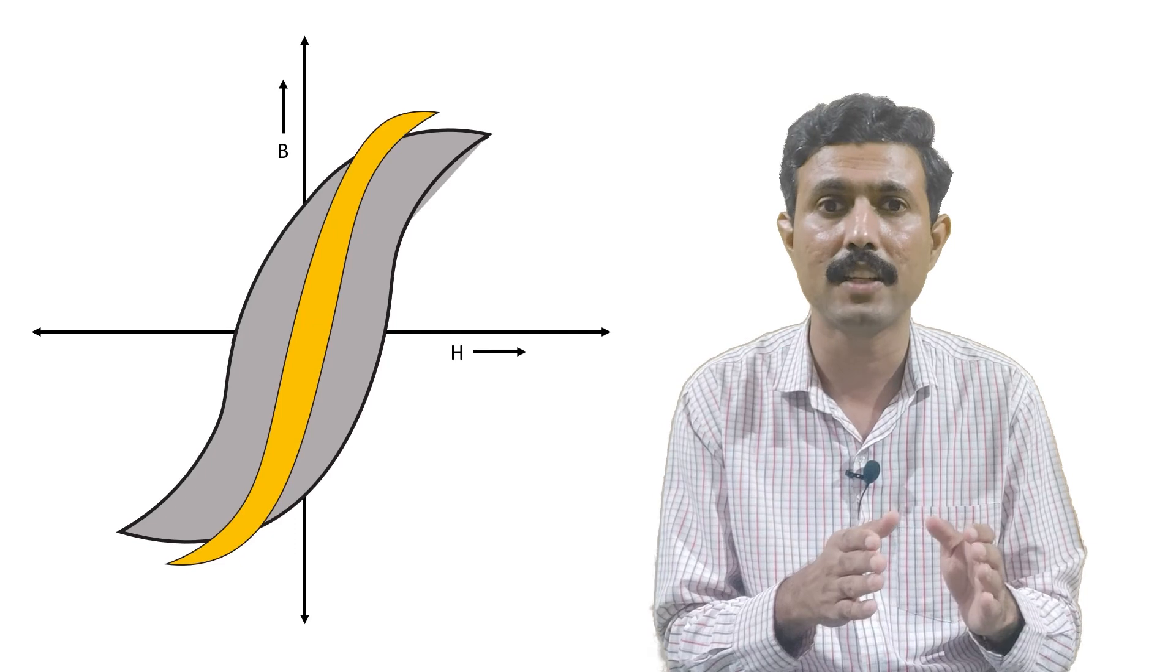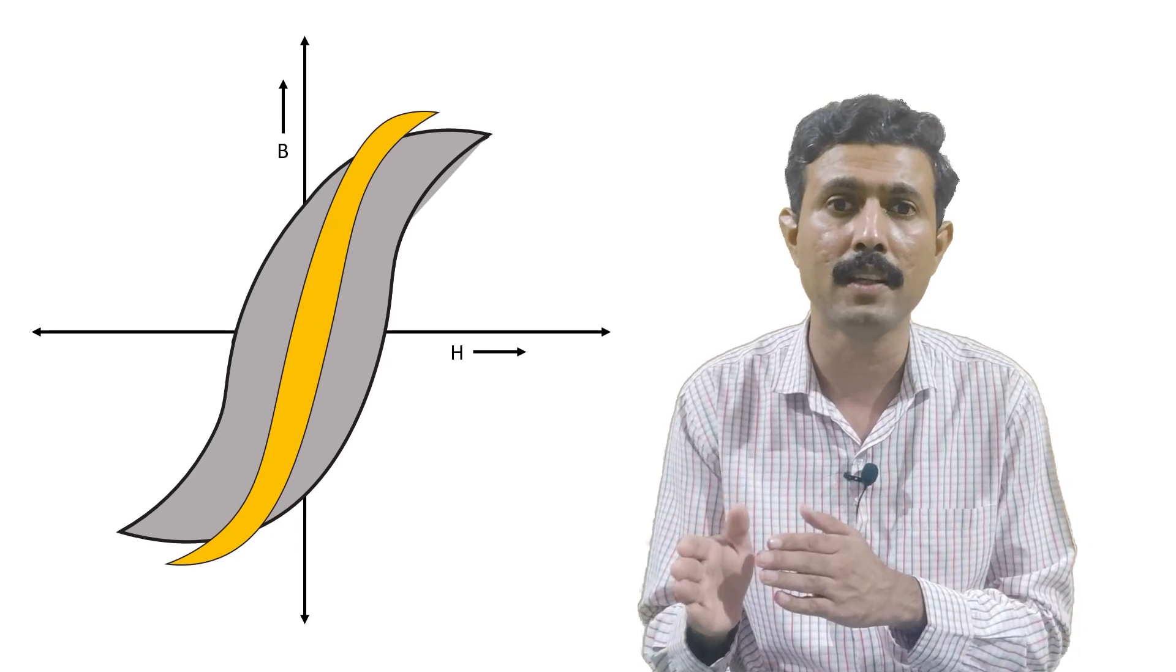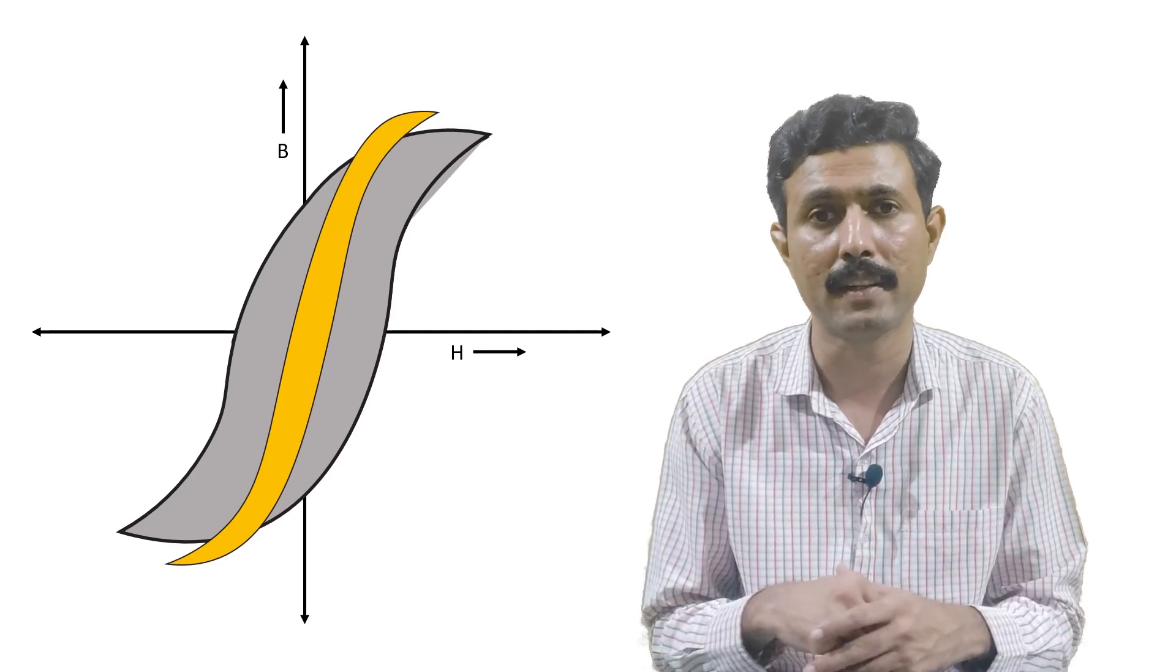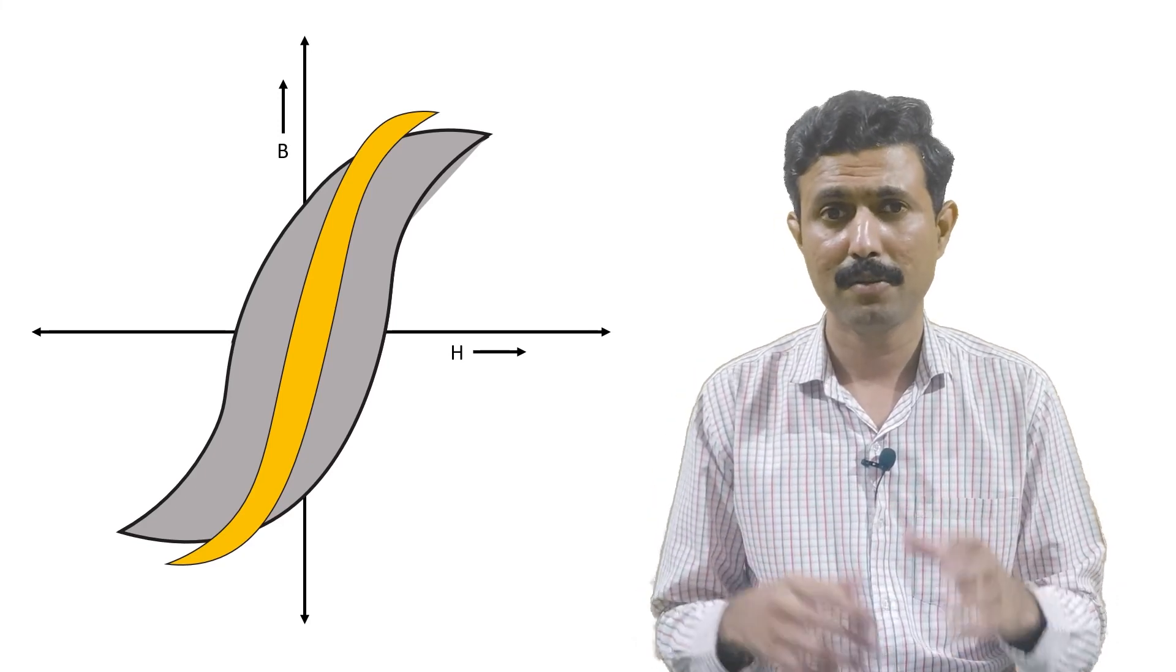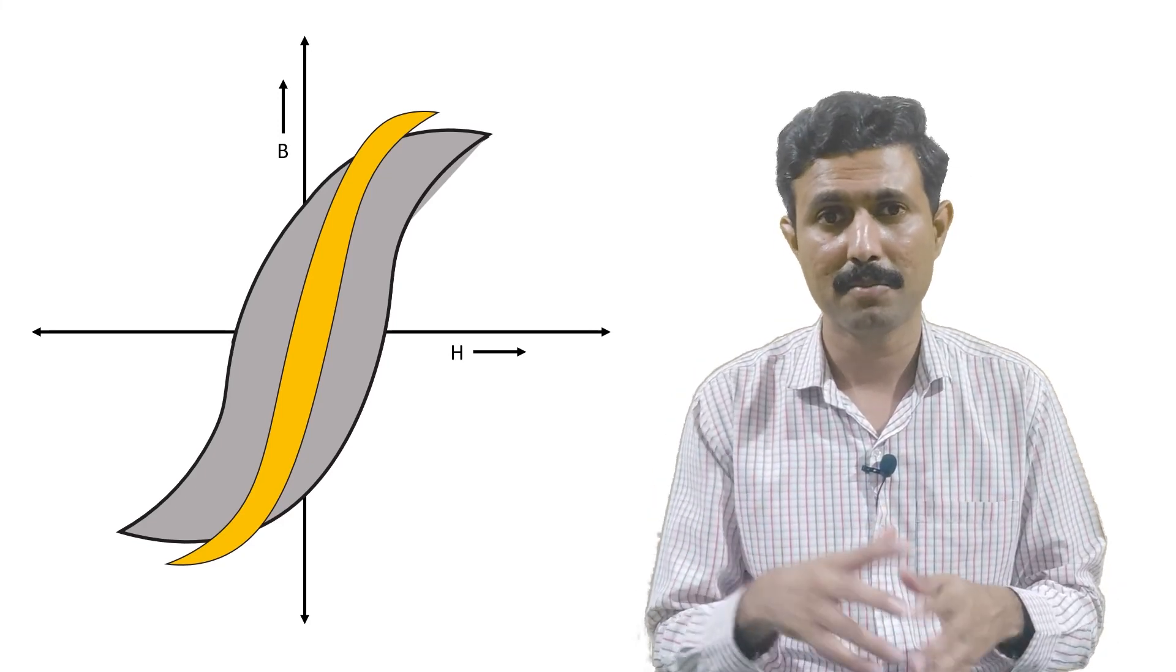And that is why silicon steel material is preferred over the iron as a core material of electrical rotating machines. If you have enjoyed the video, do not forget to hit the like button and subscribe to this channel.